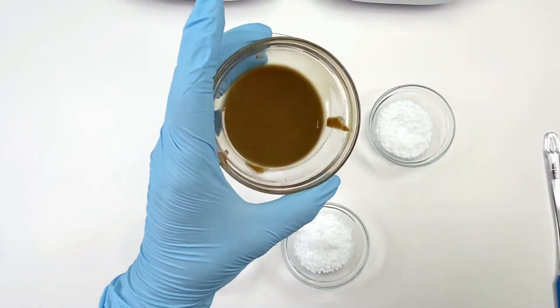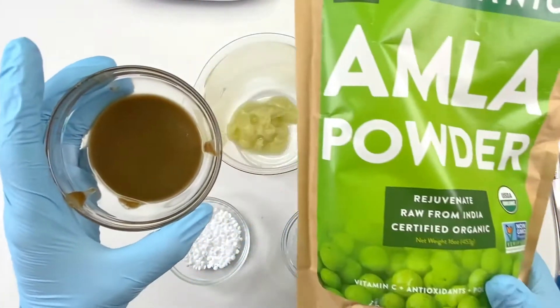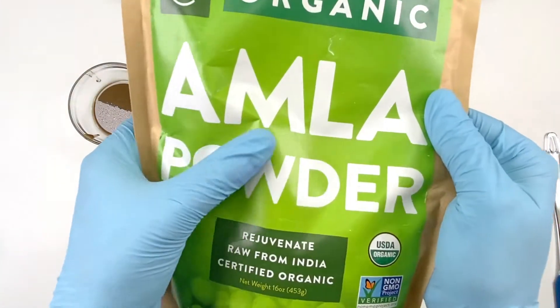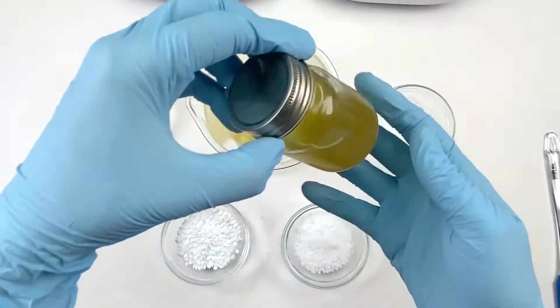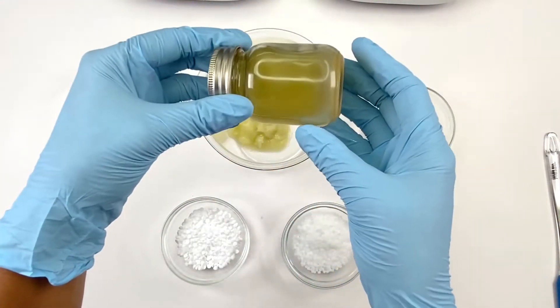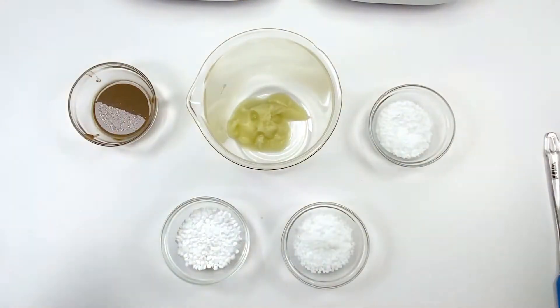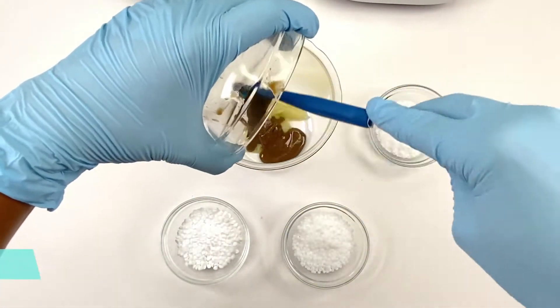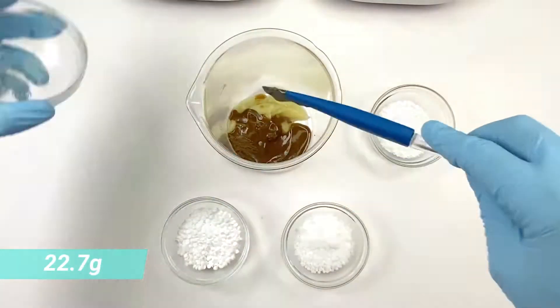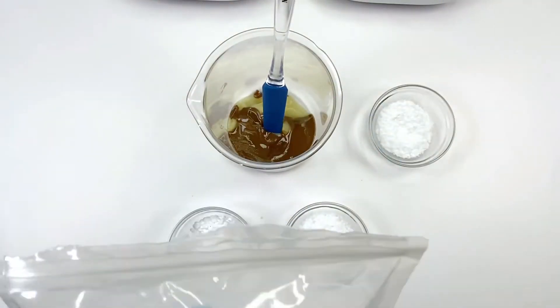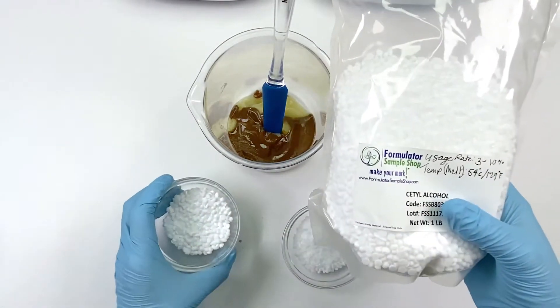In this beaker we have amla paste. I want to show you how I created this paste. This is the amla powder that I am actually using inside of here. I infused amla powder with jojoba oil and let it sit for about one week. In the beaker you have 22.7 grams of amla paste. I try not to waste ingredients, so I always use the paste to make something with, and this is what I've done it for.